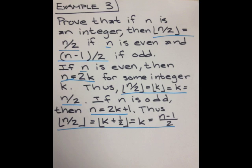If n is odd, then n equals 2k plus 1. Thus the floor of n over 2 is equal to the floor of (2k plus 1) over 2, or the floor of k plus 1/2, which equals k, which equals (n minus 1) over 2. This proves our statement.